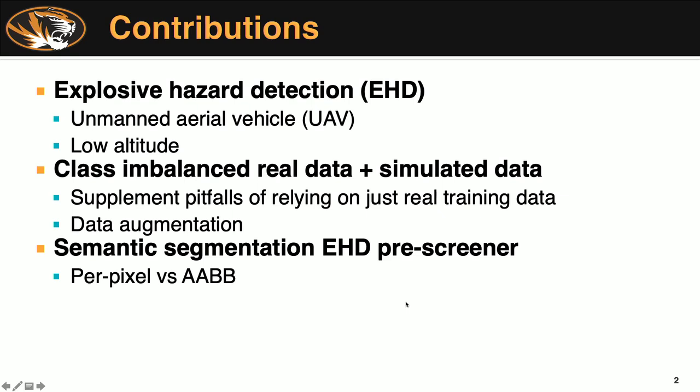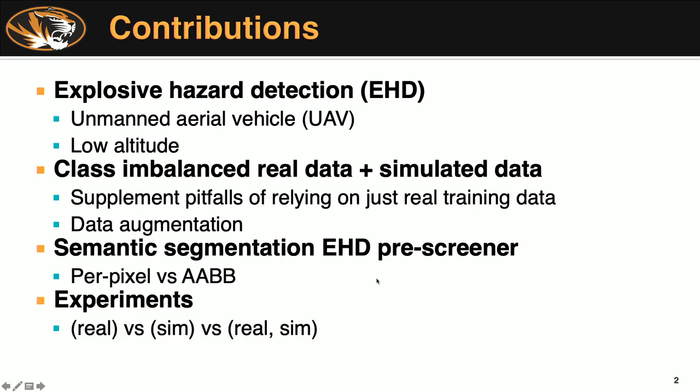We wanted to use a semantic segmentation algorithm for EHD prescreening. We used perfect labeling on that simulated data versus axis-aligned bounding boxes on the real data. In order to identify how we were going to collate those datasets and make sure that the simulated data would fill in the gaps, we conducted a series of experiments that combined real data versus simulated data.